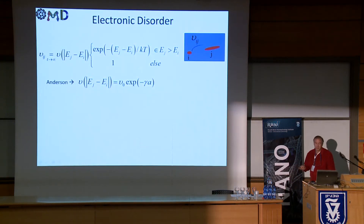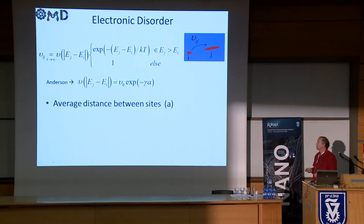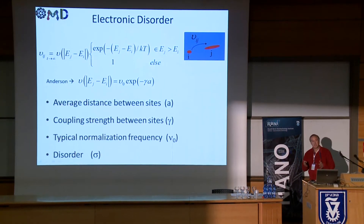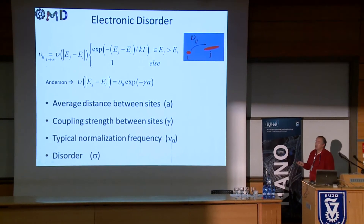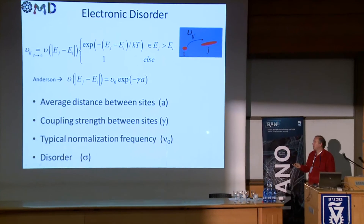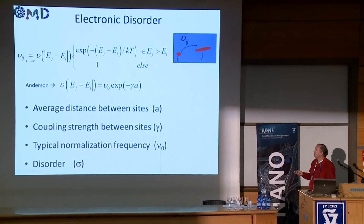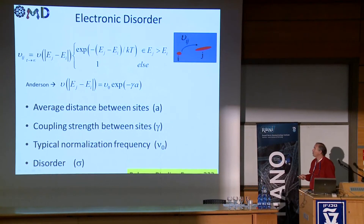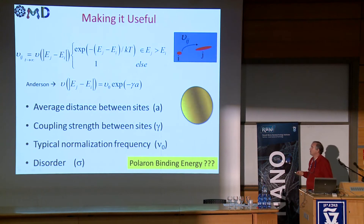Basically in these materials, charges are hopping from molecule to molecule and we know how to write the rates. We know what determines the rates — the average distance, the density of the film. How well the molecules talk to each other, this is the coupling. Everything is well documented in the literature and there have been many numerical works analyzing this kind of system, and we do the same with a slightly different motivation.